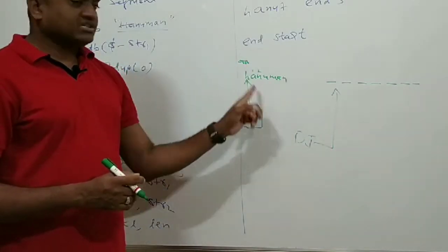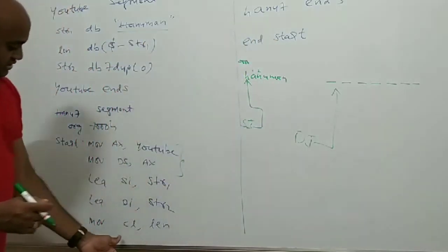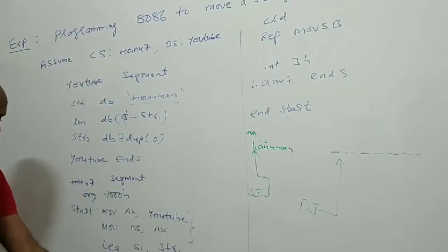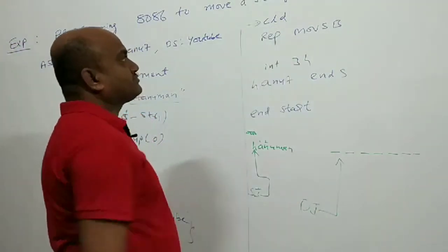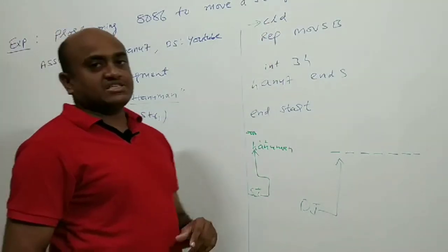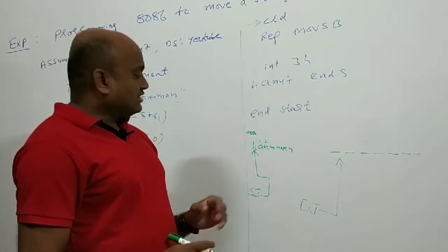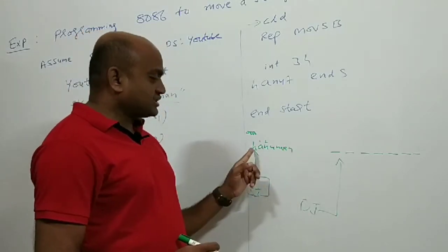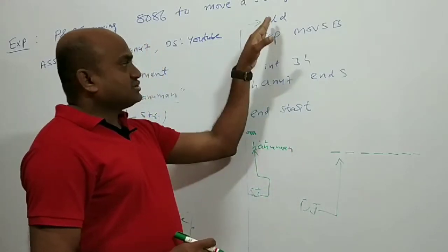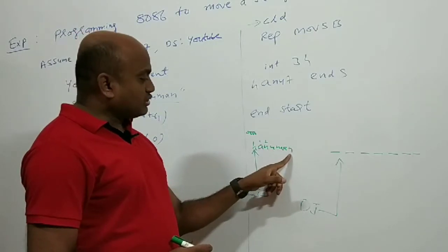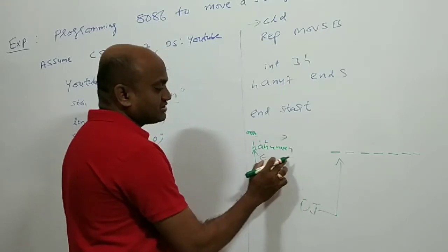7 number of times I have to move: first H, next A, next N, U, M, A, N like that. So put the length in CL, and a very important step here is CLD — Clear Direction Flag. This direction flag is available in the flag register of 8086. This direction flag will decide whether to process the string in auto increment mode — like starting with H, next A, N, U, M, A, N — or if you set this direction flag, it will process the string in auto decrement mode. If you have cleared the direction flag, it will copy first H there, then A.